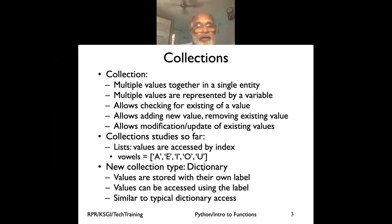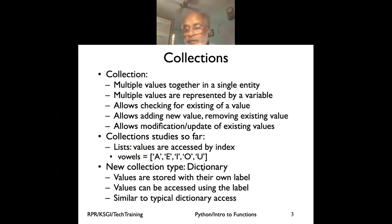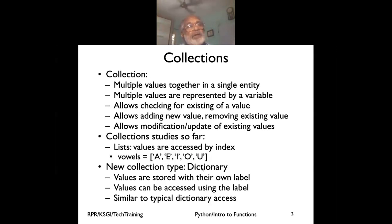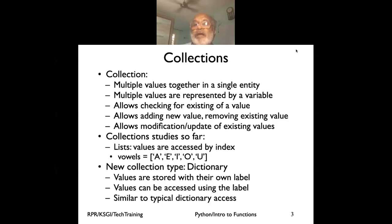We defined a list - for example, 'vowels' as a list - and if we say vowels[0] we get 'a', vowels[4] we get 'u'. Today we'll discuss a new collection type: the dictionary, which is more powerful because rather than using index positions like vowel[0] or vowel[1], we can associate a name to each element and access them using that name.